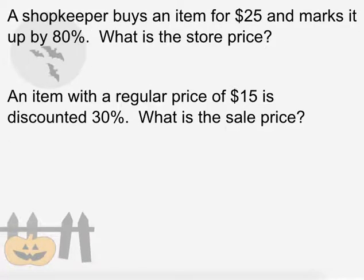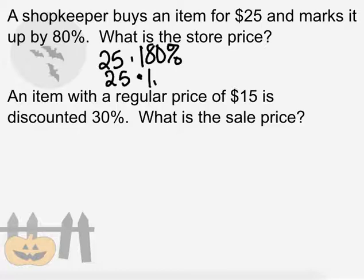A couple more. A shopkeeper buys an item for $25 and marks it up by 80%. What is the store price? Lots of ways to do this one. How I would go about this one is saying, well, my original price is $25. And I'm increasing it by 80%. Or I can say my original 25% and my new price is 180% of the original. Because I increased it by 80%. Which means I can take 25 and multiply it by 1.8. When I do that, I find that my new price is $45. Our increase, 80%, is $20 that we added on top.